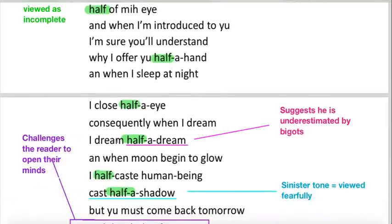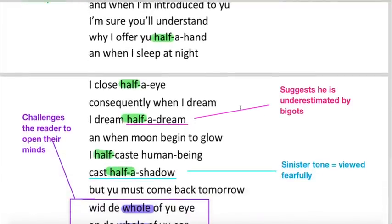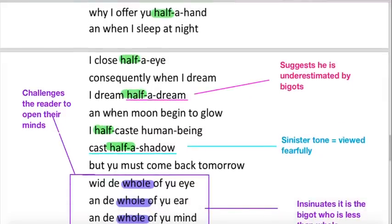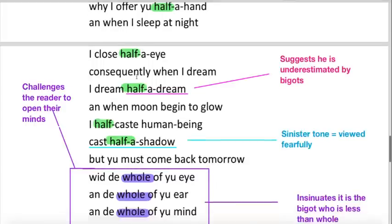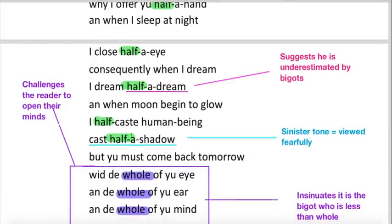But I think it gets a little darker here. I dream half a dream. I think that suggests maybe he is less capable than those of pure race. That he can't dream fully, that he can't accomplish the same things as someone else. And then we have quite a sinister tone or quite a dark image of this full moon, and he's only able to cast half a shadow. I think it's quite a dark image, which reflects how people might even fear him, or think that he is capable of evil. Although he's been quite humorous and joking about this, I think it becomes quite sinister towards the end here.